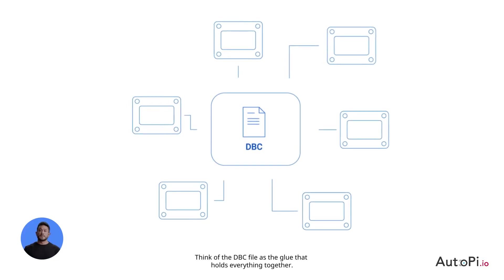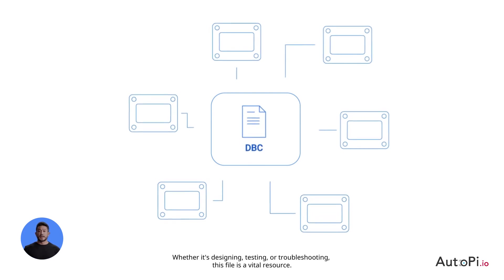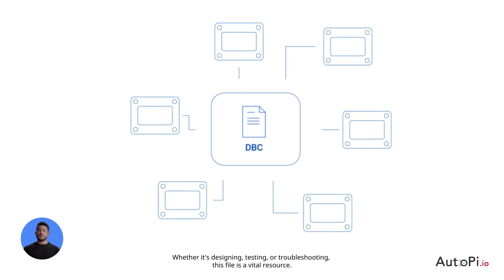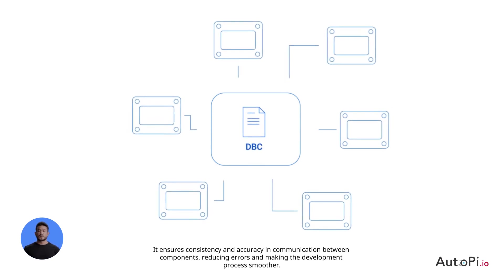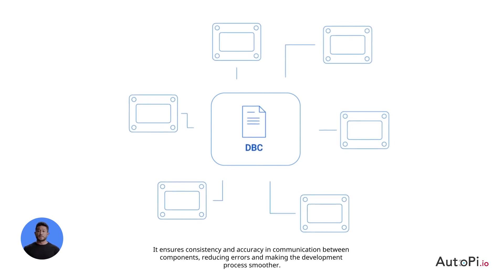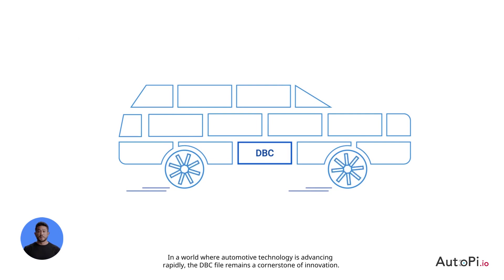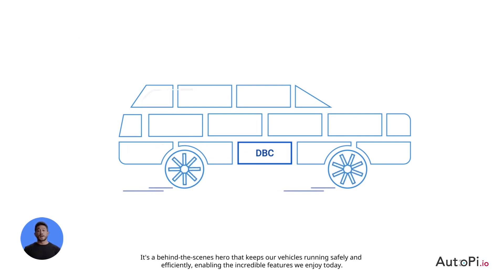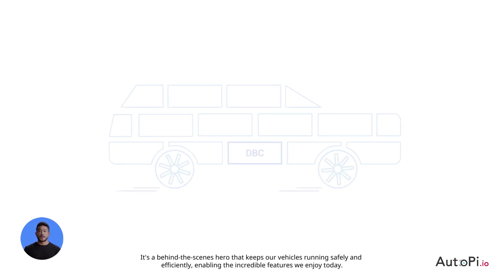Think of the DBC file as the glue that holds everything together. Whether it's designing, testing, or troubleshooting, this file is a vital resource. It ensures consistency and accuracy in communication between components, reducing errors and making the development process smoother. In a world where automotive technology is advancing rapidly, the DBC file remains a cornerstone of innovation. It's a behind-the-scenes hero that keeps our vehicles running safely and efficiently, enabling the incredible features we enjoy today.